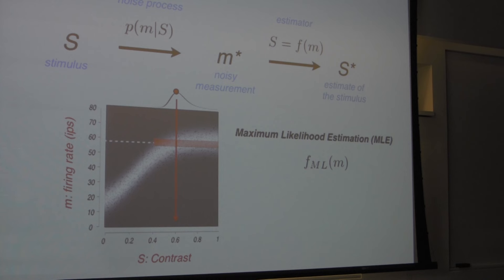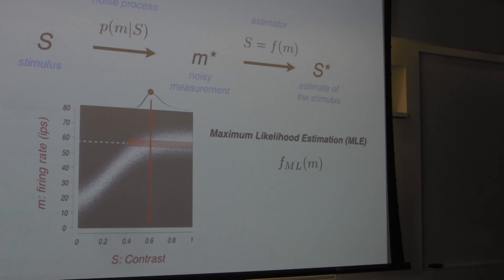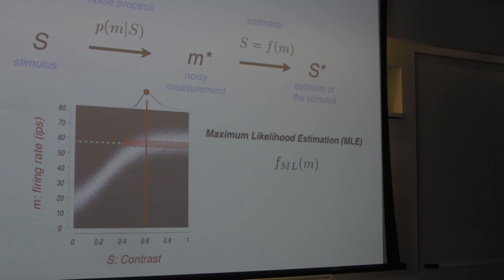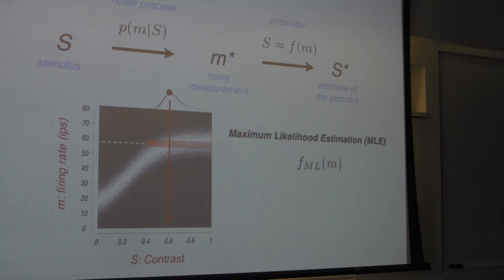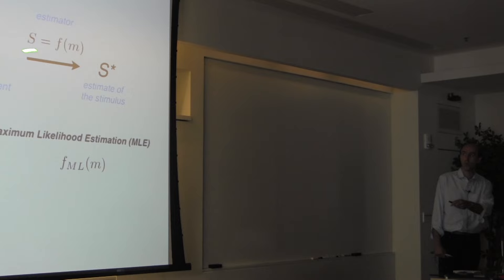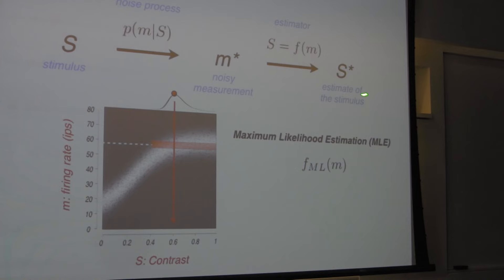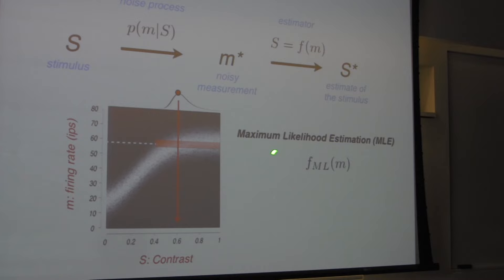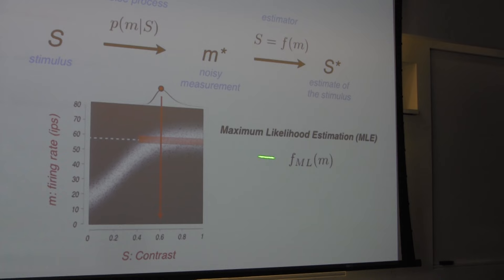That's the starting point for me to get to the Bayesian estimator, which builds on the maximum likelihood estimator. Notice that up to this point I haven't said a word about prior expectation. I took a detour to say: when you don't have prior expectation, what is the general framework? There is a stimulus, there is a measurement, we want to know what the stimulus is. Even without any prior knowledge, you still have a statistical problem to solve because the system is noisy.